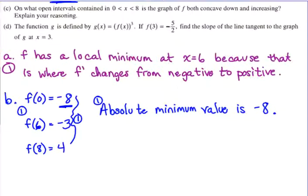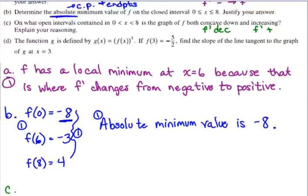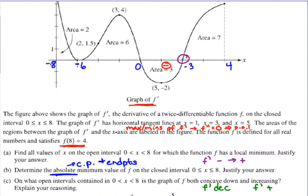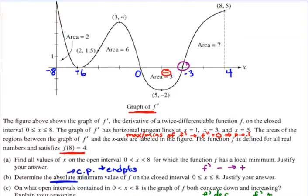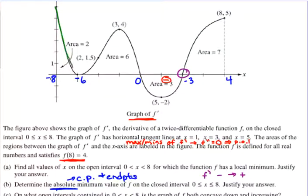Okay, part C. On what open intervals contained in 0 to 8 is the graph of f both concave down and increasing? Okay, so concave down, we're looking at the derivative, so we've got to think about this. Concave down, if we're looking at the derivative, isn't that where the derivative is decreasing? Okay, and where f is increasing, that's where the derivative is positive. So let's go back and look at our graph where the derivative is positive and it's decreasing. So we are decreasing and positive here. We are decreasing and positive here. And that's it. From 0 to 1 and 3 to 4.